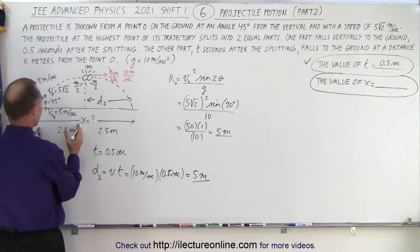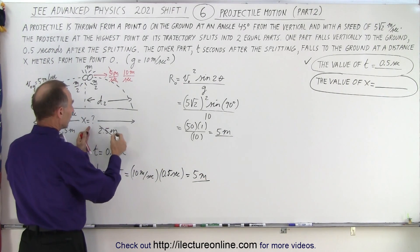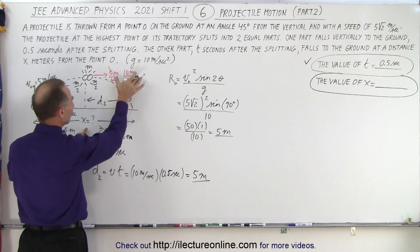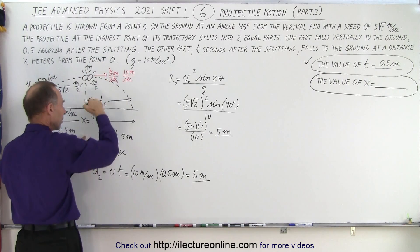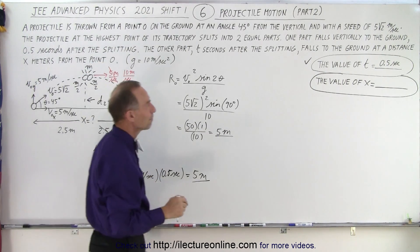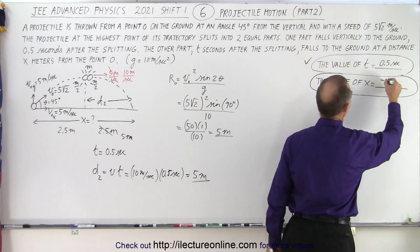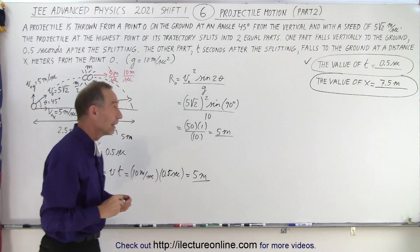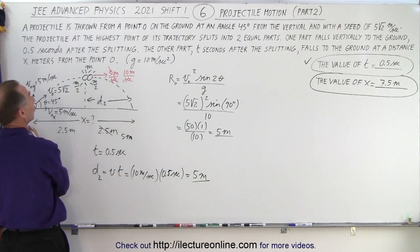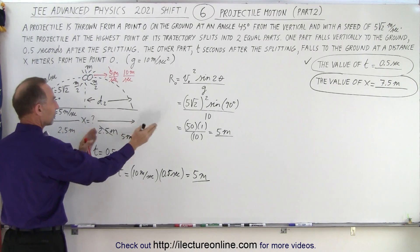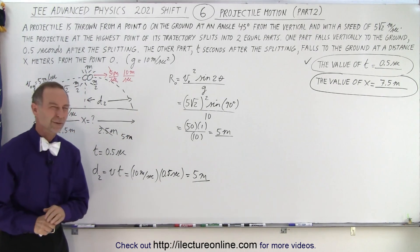So, 2.5 meters plus, now instead of going only 2.5 meters, it's going to go 5 meters in the second half, because it now has twice the speed, it takes the same amount of time to hit the ground. So therefore, 2.5 plus 5, that means a distance of 7.5 meters before it hits the ground. And that is from the original point, so 2.5 plus 5, 7.5 meters before it hits the ground.